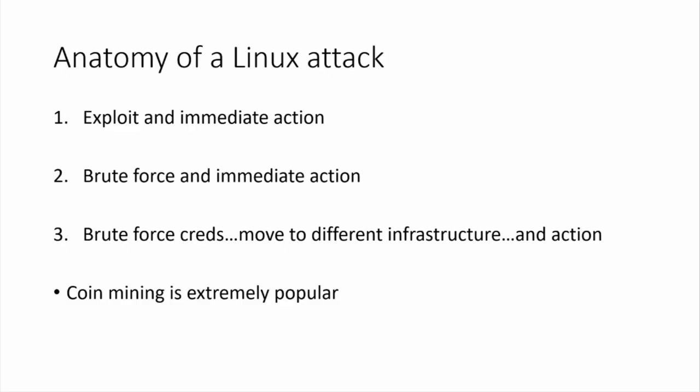What kind of attacks do we see? Generally three types. First: an attacker gets an exploit, uses it, and immediately does some action. Second: brute forcing — every protocol can be brute-forced. They get a credential and install something, which is pretty much always a coin miner right now. Third, and more interesting: brute force to get a credential, then no attack. Days or weeks pass, and then someone else on different infrastructure comes in and installs software.